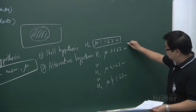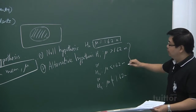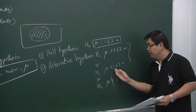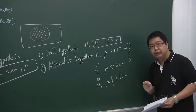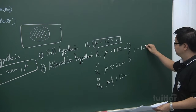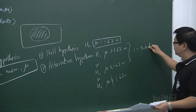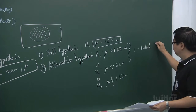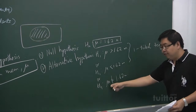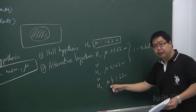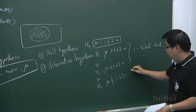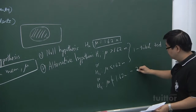This type of test, where you are testing for a definite increase or definite decrease, is what we call a one-tail test — one-sided. And for the situation when we are testing for any change, we call it a two-tail test.